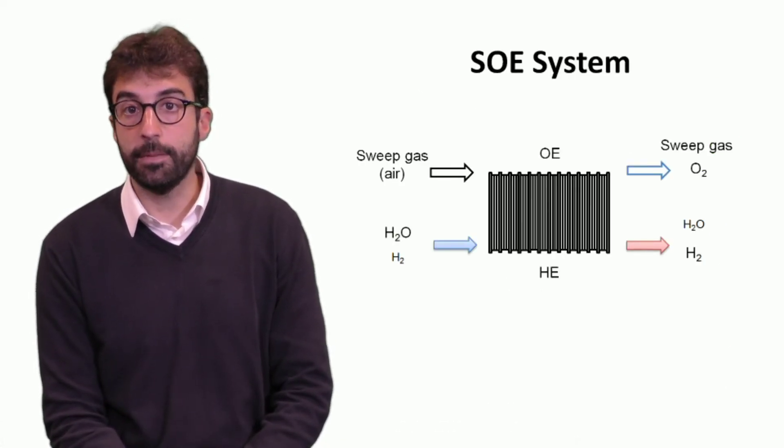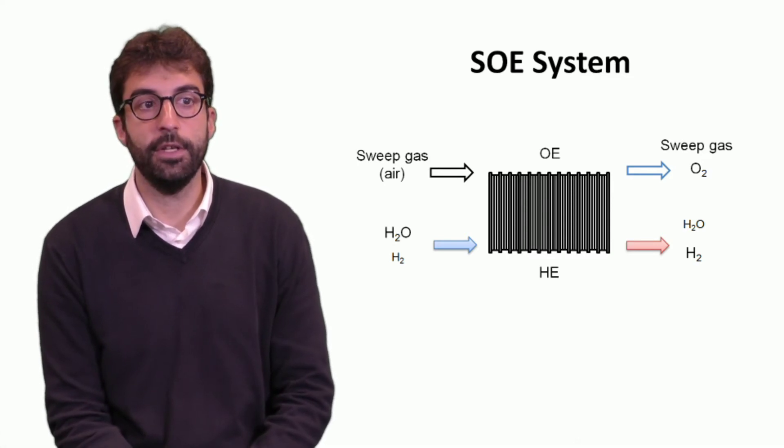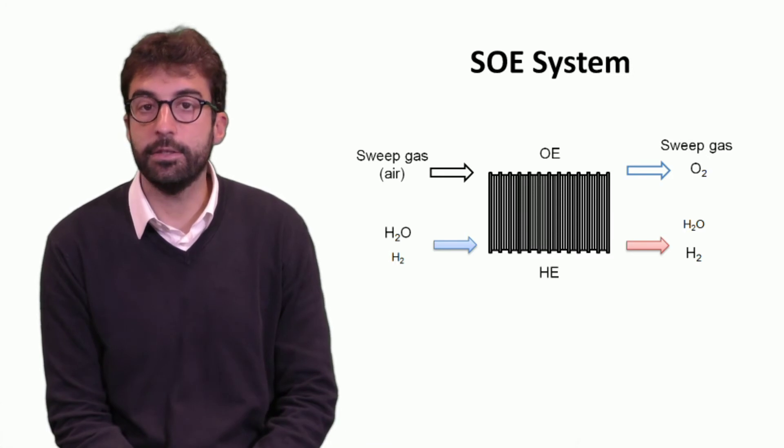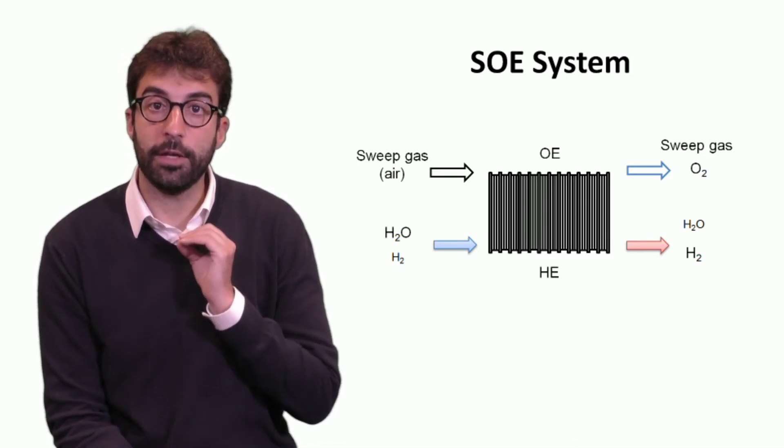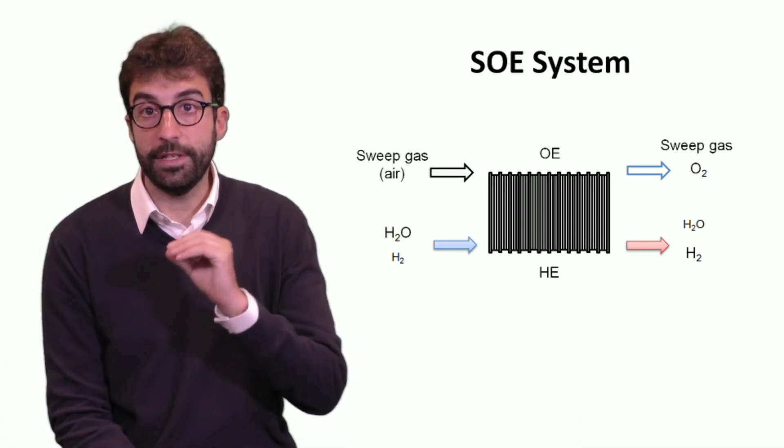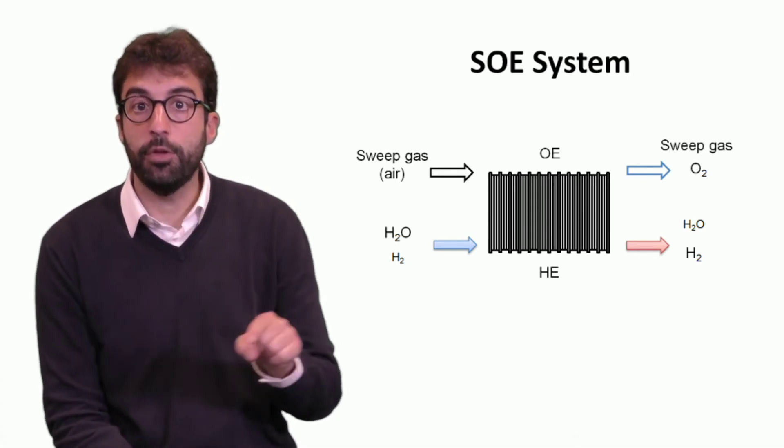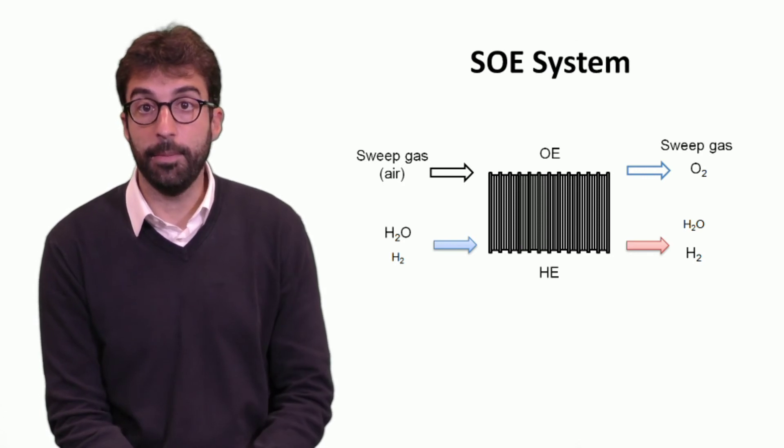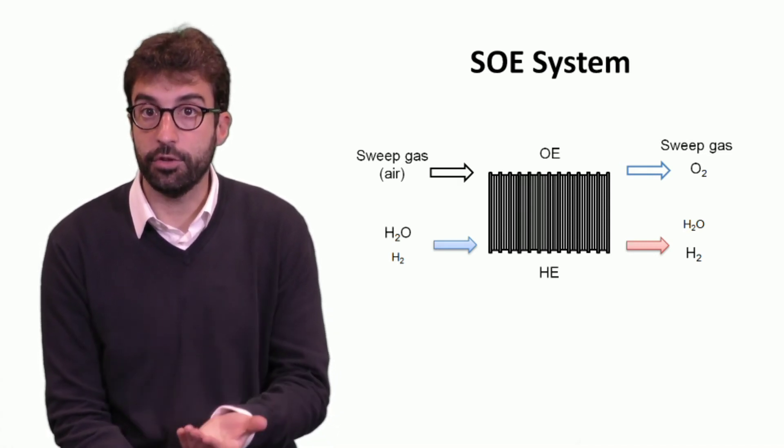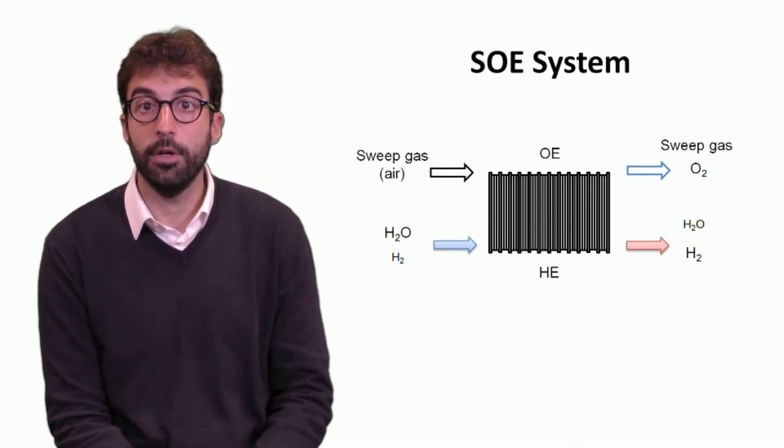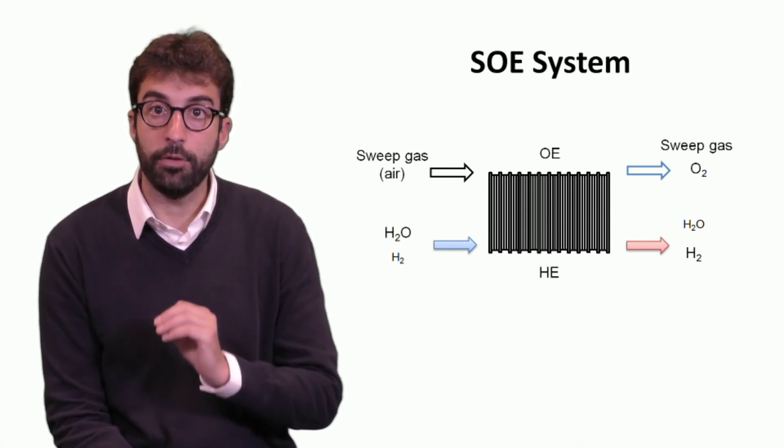Now if we look at the electrolysis system, at the hydrogen electrode we need to keep a reducing atmosphere to avoid nickel oxidizing. So we usually flow a small amount of hydrogen. The inlet is not only steam but steam plus hydrogen. What we have usually is a mixture with high concentration of steam and low concentration of hydrogen, around 5 percent at the inlet. At the outlet we have high concentration of hydrogen and very small concentration of steam to avoid starving of the reaction.